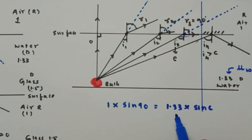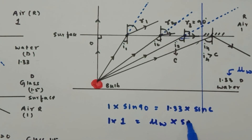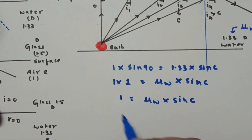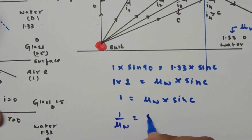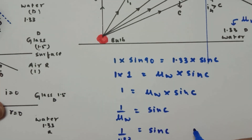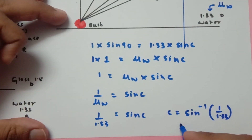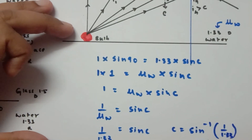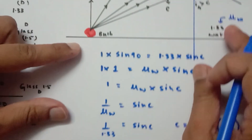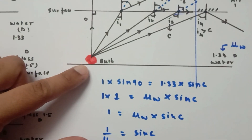So 1 × sin 90° = mu_w × sin(c), which gives sin(c) = 1 / mu_w. Therefore 1 / 1.33 = sin(c), and c = sin⁻¹(1/1.33), which gives approximately 48 degrees for water. If the medium were glass with refractive index 1.5, the critical angle would be approximately 42 degrees. So the critical angle is a characteristic of the medium.